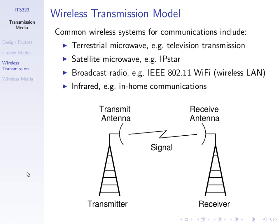In wireless transmission, we have a transmitter with some electrical signal. The antenna generates an electromagnetic waveform that propagates through the air and is received by our receive antenna, and we get the resulting receive signal.